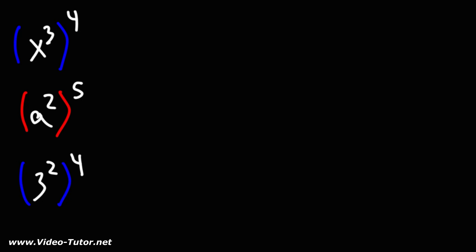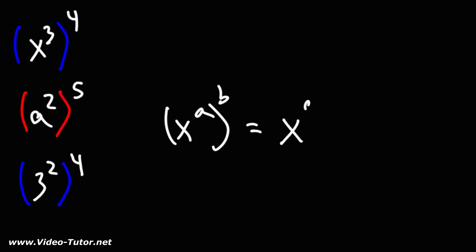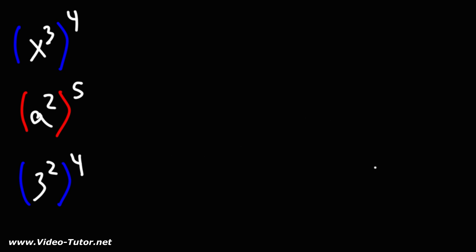In this video lesson, we're going to talk about how to raise one exponent to another exponent, or how to find the power of a power. So let's say you have x raised to the a, which is raised to the b. When you raise one exponent to another, you can multiply the two exponents. So this is x to the a times b. That's the formula that we're going to use.